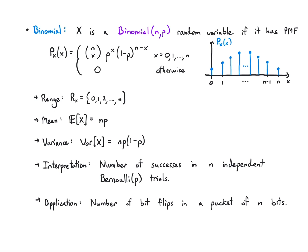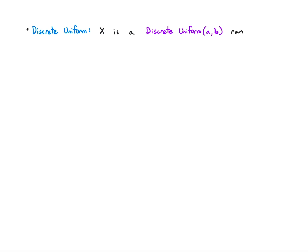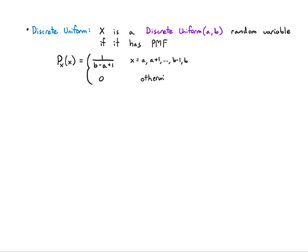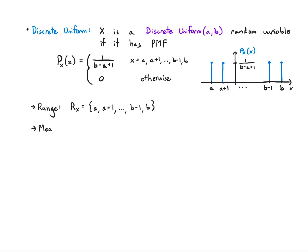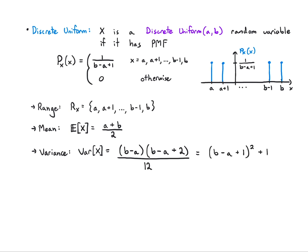Next we have the discrete uniform random variable. X is DiscreteUniform(a, b) if it has a flat PMF taking values on the integers between a and b inclusive, with p(x) = 1 / (b - a + 1). The range is from a to b, and the mean is right in the center: (a + b) / 2. The variance formula is less obvious — you might wonder why you need to define this family, since the mean is easy, but once you see the variance formula, you'll appreciate having it worked out. That factor of 12 in the denominator emerges when you carry out the full calculation, and it's nice not to have to redo that every time.